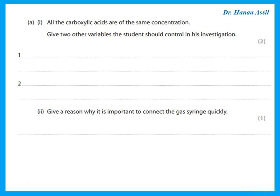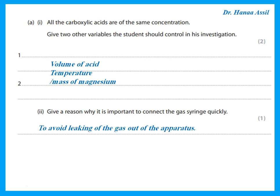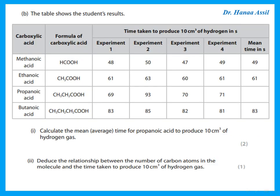The student repeats this with three other carboxylic acids, all at the same concentration. Two other variables to control: the same volume of acid, the same temperature, or the same mass of magnesium — any two of these would be correct. The gas syringe must be connected quickly to avoid gas leaking out of the apparatus.